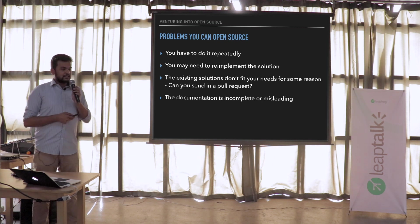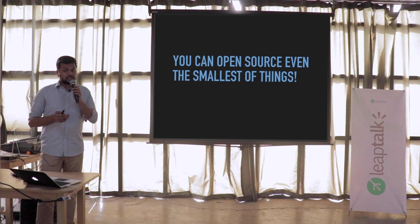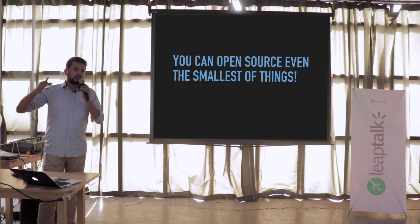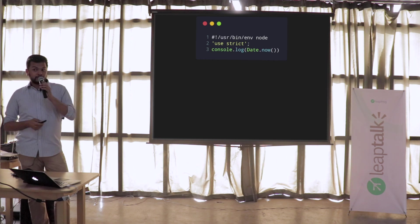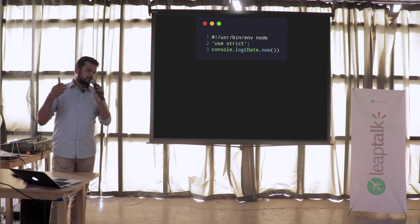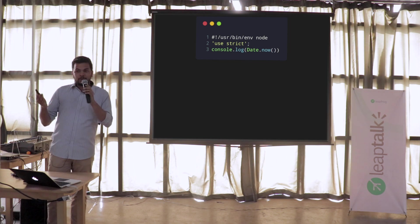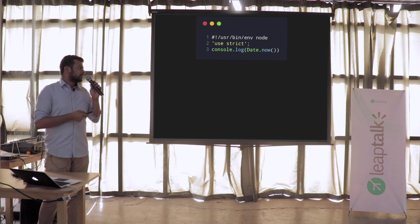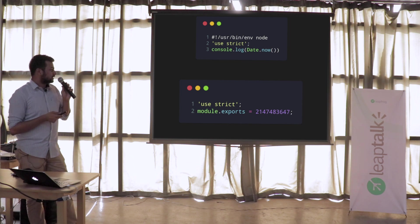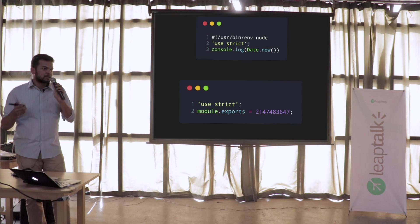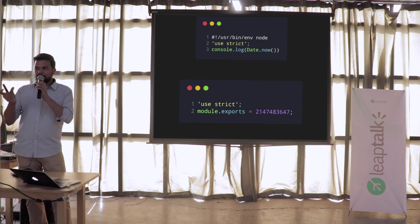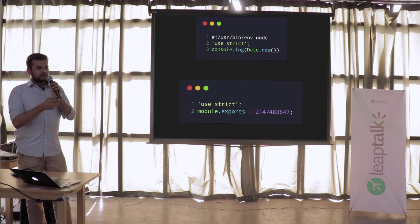You don't need a big problem to open source at all — you can open source even the smallest of things. It doesn't have to be big and grand and demanding of a thousand stars. For example, there's a package on NPM — the third line says console.log(Date.now()) — it prints the current date. And this is an actual package downloaded by thousands of people. Another example is just a single line that exports a number — the maximum number limit you can pass to setTimeout in JavaScript. And that's a package too.